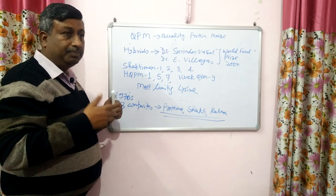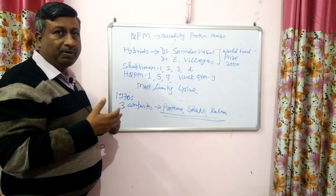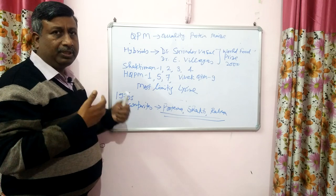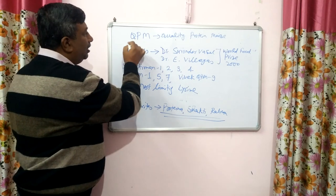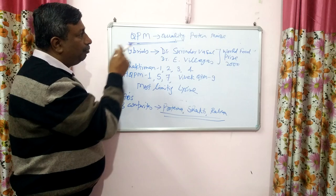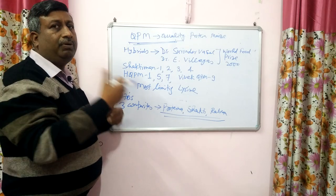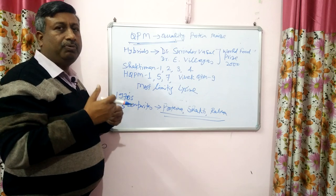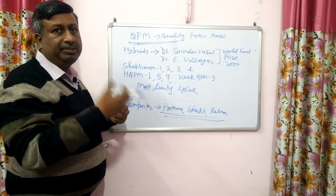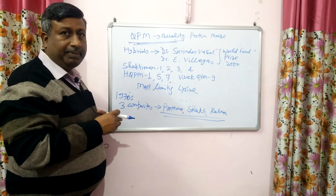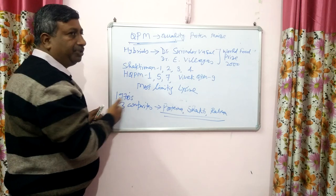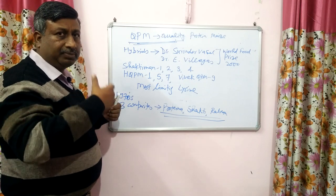This protein requirement is more for children, old persons, lactating women, and pregnant women. Research on QPM has shown that children's body weight increases and arm circumference increases when fed QPM. QPM was also fed to poultry — egg yolk quality was increased and their body weight increased. In piggery, pigs' body weight increased very rapidly. These are the advantages of QPM in human diet, poultry, and piggery.